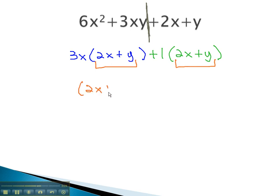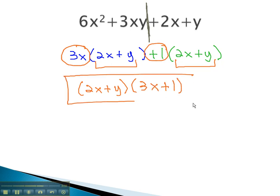2x plus y is one of our factors. The other factor comes from what's left when we factor those out, the 3x plus 1. And this becomes our solution. The factors that were multiplied together to give us the 6x squared plus 3xy plus 2x plus y were 2x plus y times 3x plus 1.